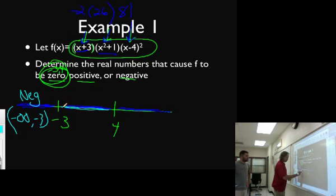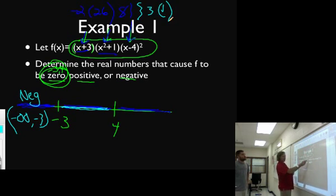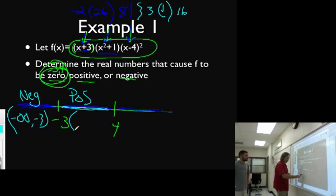Now pick a number in between these two. Let's just try zero. Zero plus three is three. Three times one times some negative number squared. Zero minus four squared is sixteen. So three times one times sixteen is a positive number. So we're going to be positive in between negative three and four. We're positive.